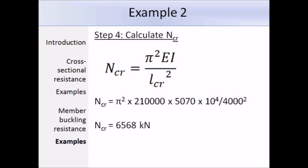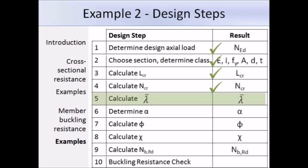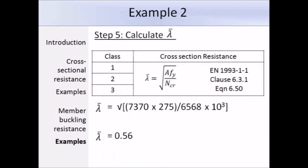Now we use NCR to work out the non-dimensional slenderness λ̄. Since we have a class 1 section, we use expression 6.50 from Eurocode 3: λ̄ equals the square root of the area times the yield strength divided by NCR. Substituting the values gives λ̄ = 0.56.